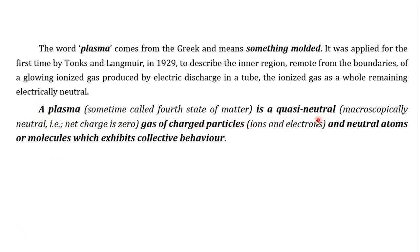Plasma is sometimes called the fourth state of matter. It is quasi-neutral because microscopically it is non-neutral, but macroscopically the total net charge is zero. It is a gas of charged particles — ions and electrons — and neutral atoms or molecules, which exhibits collective behavior. The term 'plasma' was first used by Langmuir in 1929.